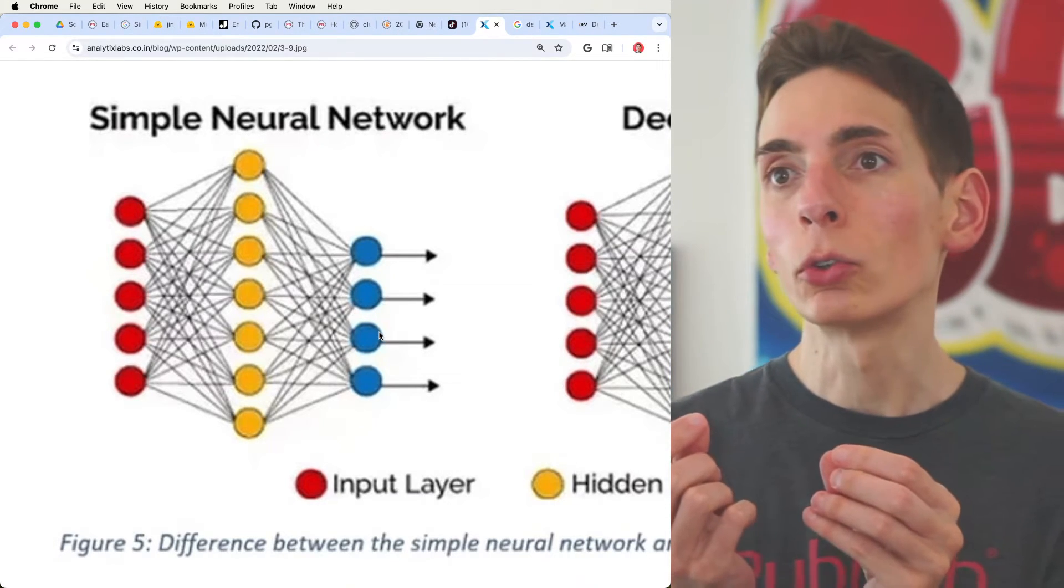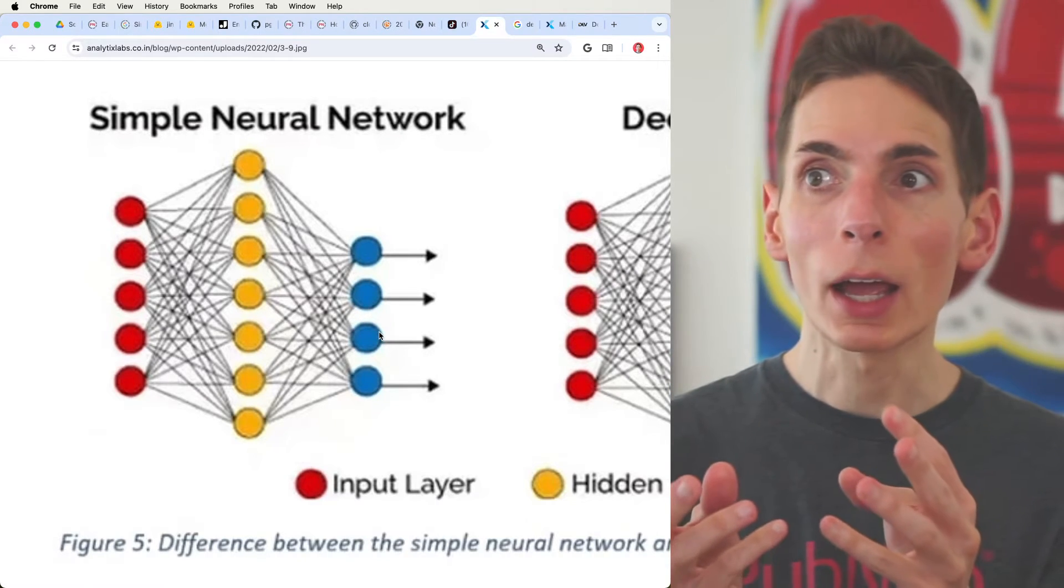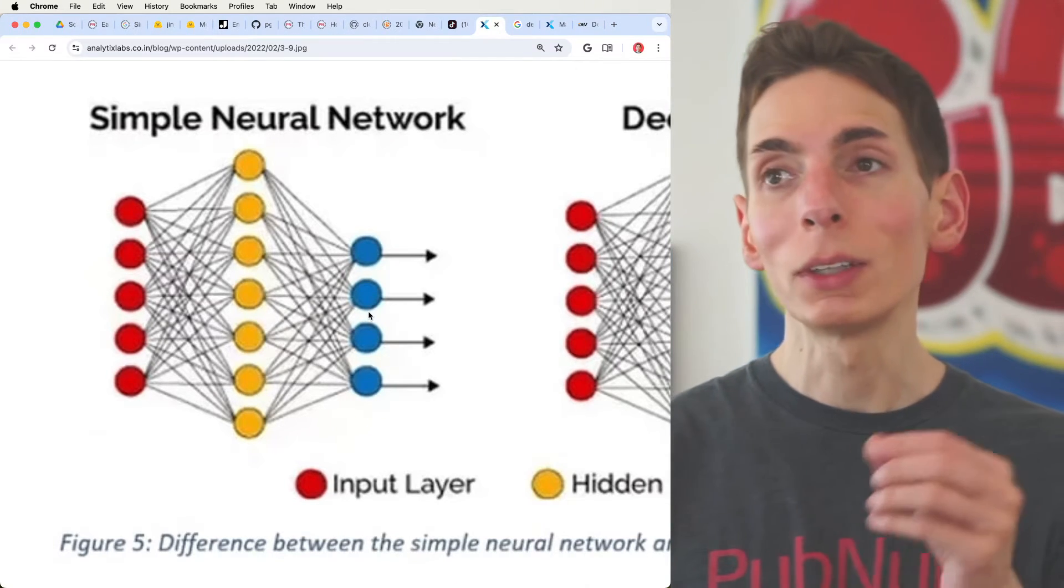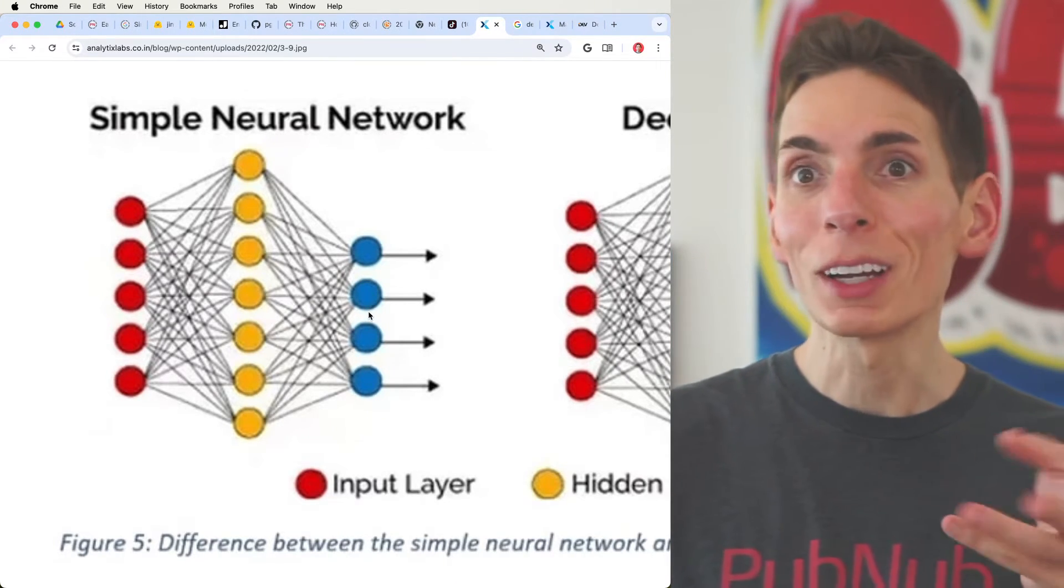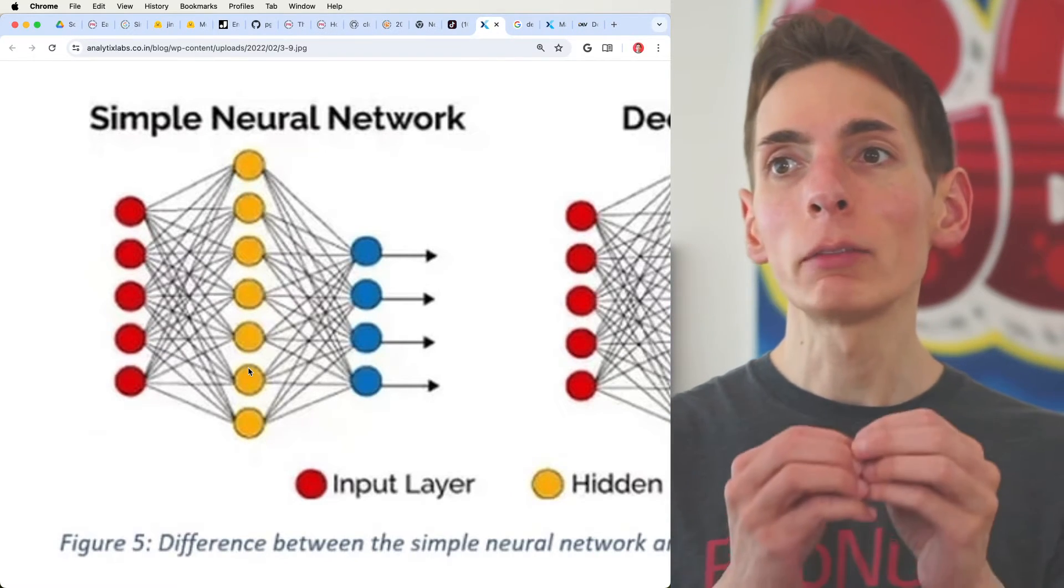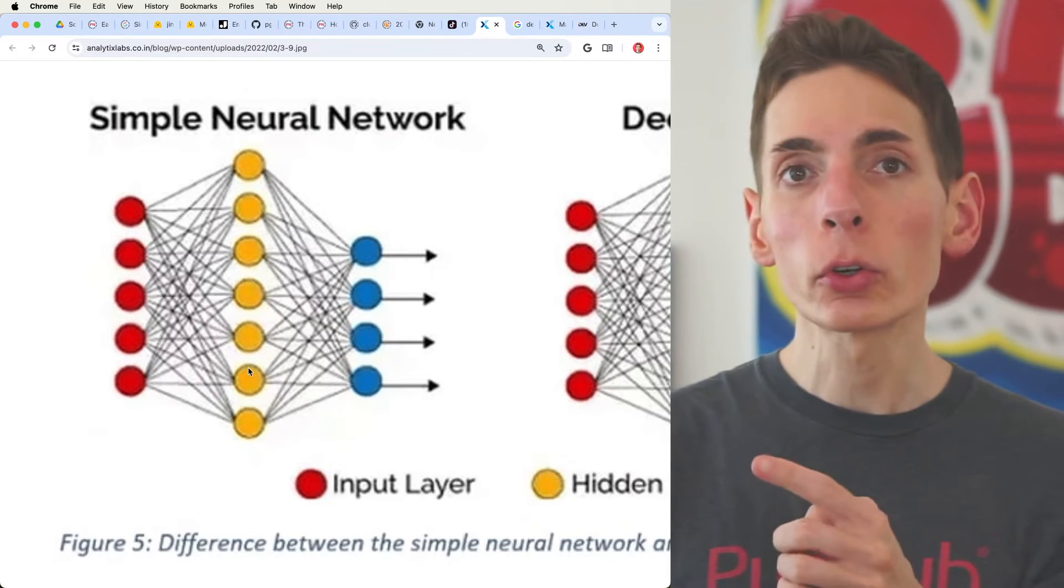So if you're looking to classify a photo between a dog and a cat, you would have potentially one or two of these output elements, and your matrix would be the size of one or two elements, a very tiny matrix. Your inner matrix here can be very large or also very small, and you can train this simple neural network.